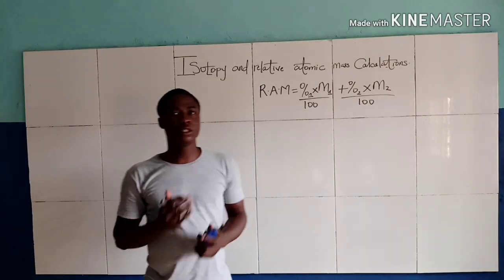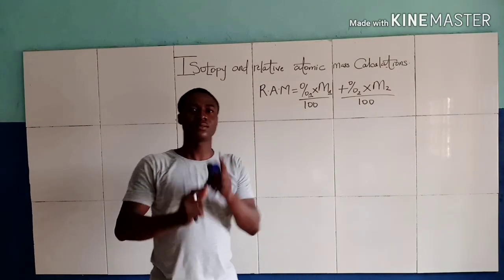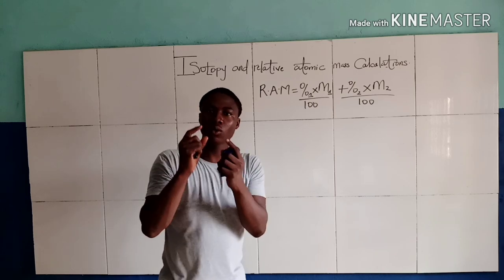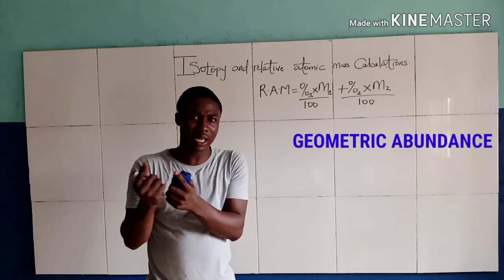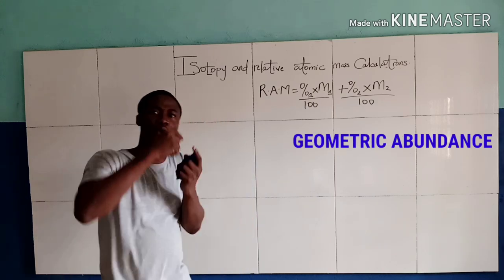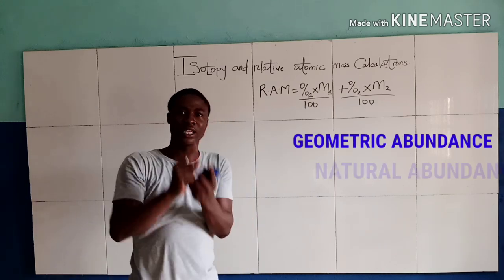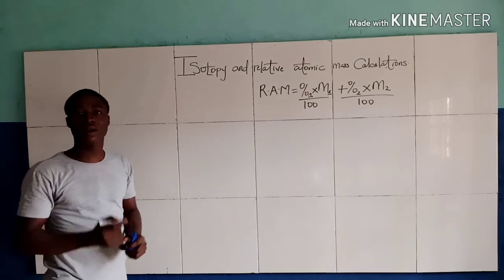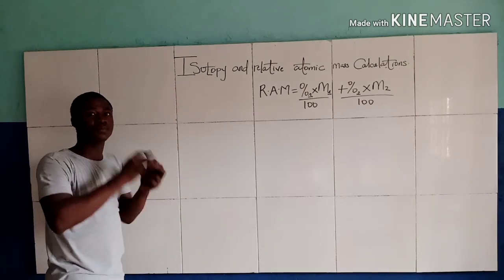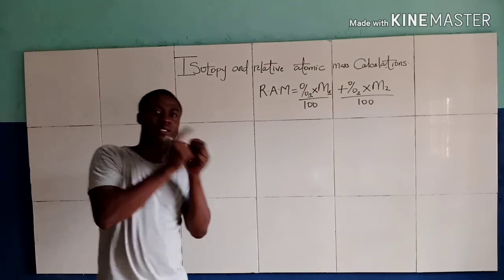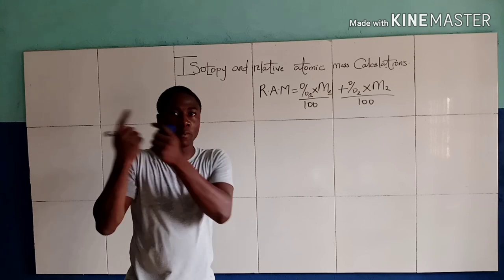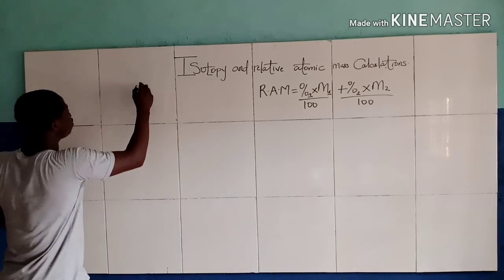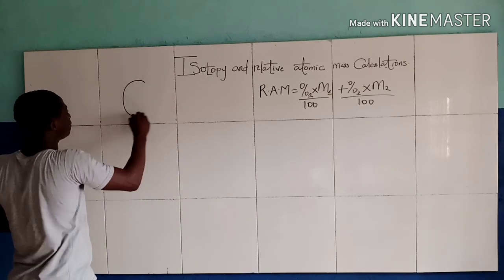It should be noted that the percent abundance is also called the isotopic abundance, or you can call it the natural abundance. Now let's quickly go over to question 2, which will be dealing with the isotope of oxygen. Oxygen has two isotopes.